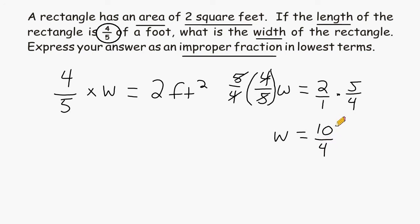And because the numerator and denominator are both even, we can just break both of those values in half, and that would equal 5 over 2.